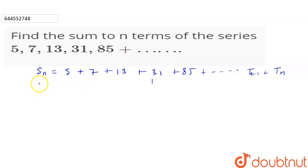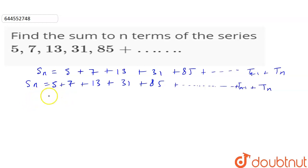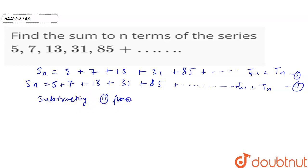We can write Sn as: Sn is equal to 5 plus 7 plus 13 plus 31 plus 85 plus so on till Tn minus 1 plus Tn. Now we will subtract these two equations. This is equation 1, this is equation 2. Subtracting 2 from 1, we get Sn minus Sn is equal to 0.